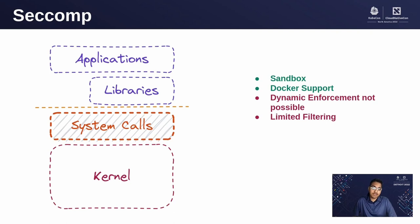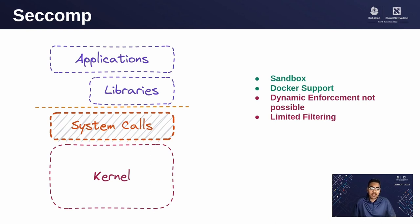Next is seccomp. Seccomp lets us sandbox our containers with various system calls — controlling what system calls are accessible to them. It is natively integrated with Kubernetes, Docker, and other container runtimes. But the issue is that dynamic enforcement is not possible, there are limited filtering options, and we cannot decide inside a container what application needs to access what syscall. It treats the container as a single entity.